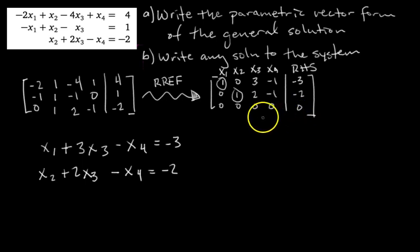Okay, and then the last row doesn't give us any information. It just says 0 equals 0. So we have those two equations. What I want to be able to write, though, is I want to be able to write all four of our unknown variables in terms of our free variables.